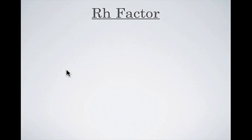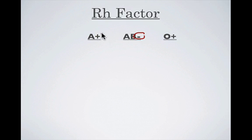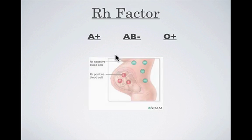The last thing I want to talk about with regard to multiple alleles and blood types is RH factor. When people talk about their blood types, they'll say things like A positive, AB negative, or O positive. What does this positive or negative factor mean? That is RH factor. And who really cares about RH factor? Moms giving birth to their second child.